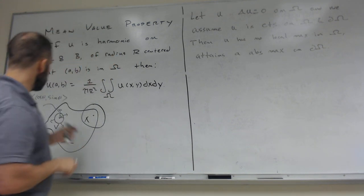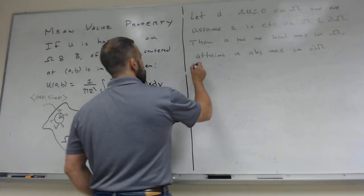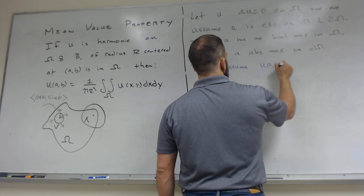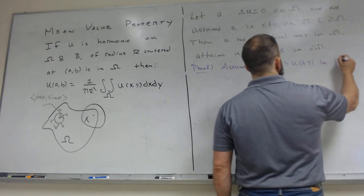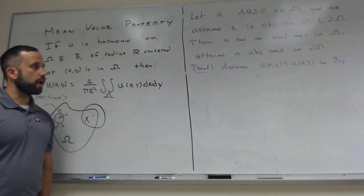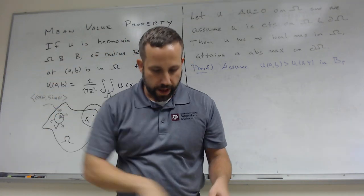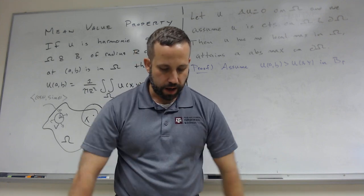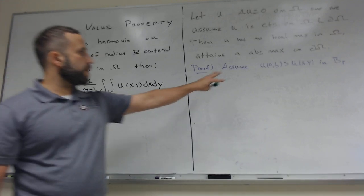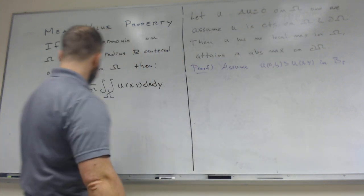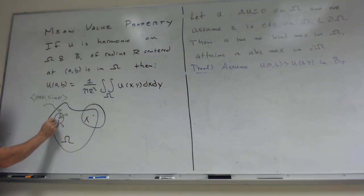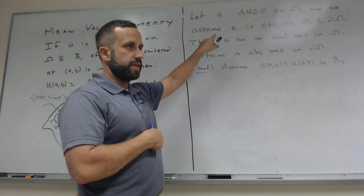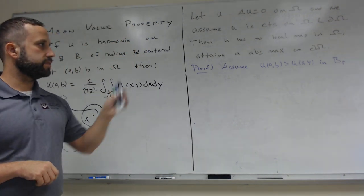Assume that U(A, B) is greater than U(x, y) for all (x, y) in some ball centered at (A, B) — in other words, we're assuming (A, B) is a local max. A local max means it's bigger than all nearby points: it's the top of a mountain. We're also assuming U is not constant, since constant harmonic functions trivially satisfy the mean value property everywhere.